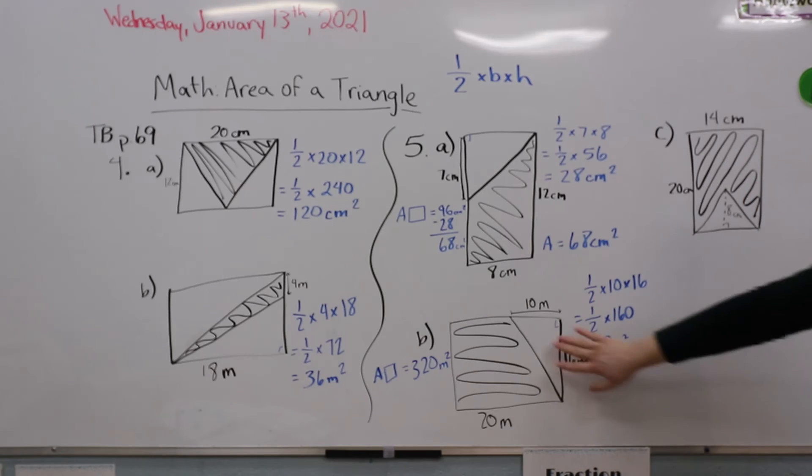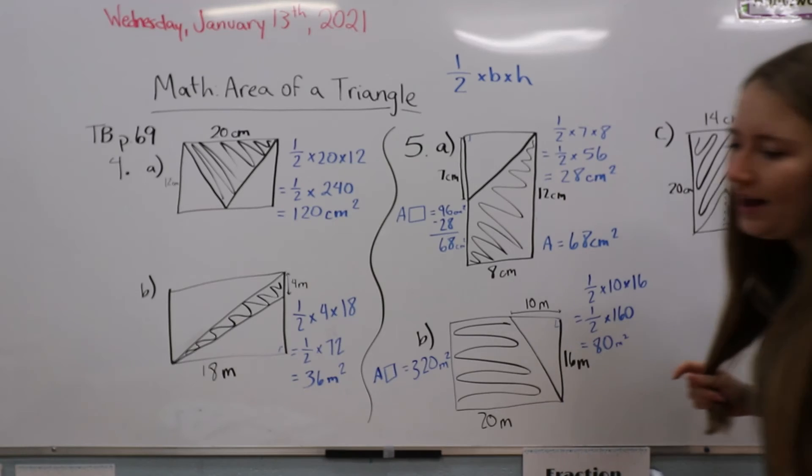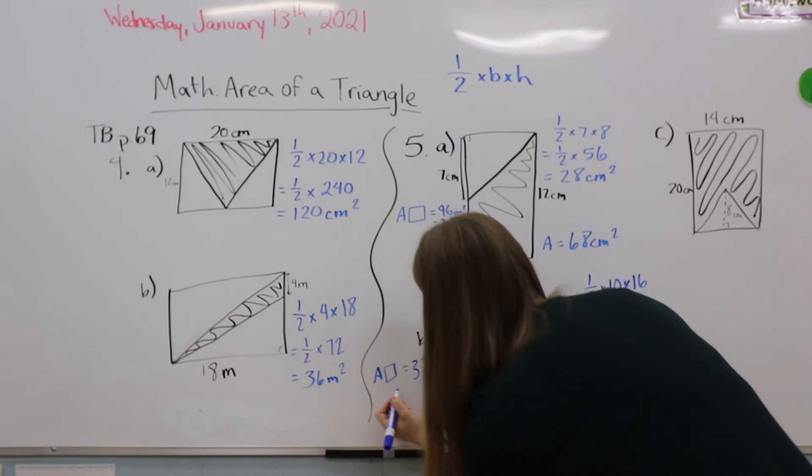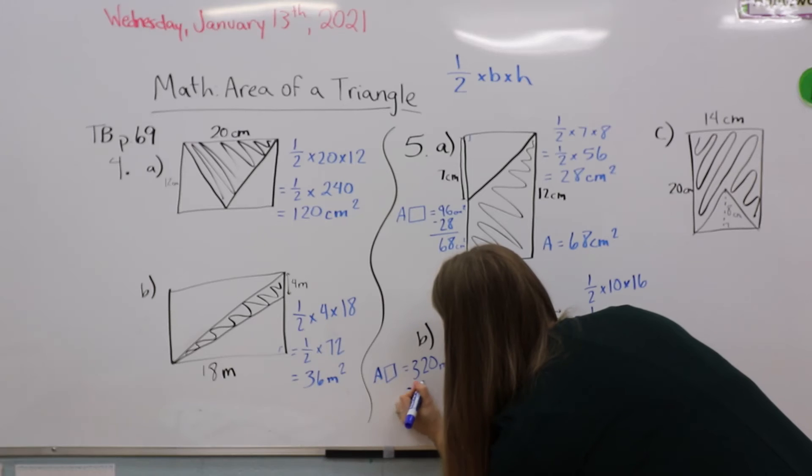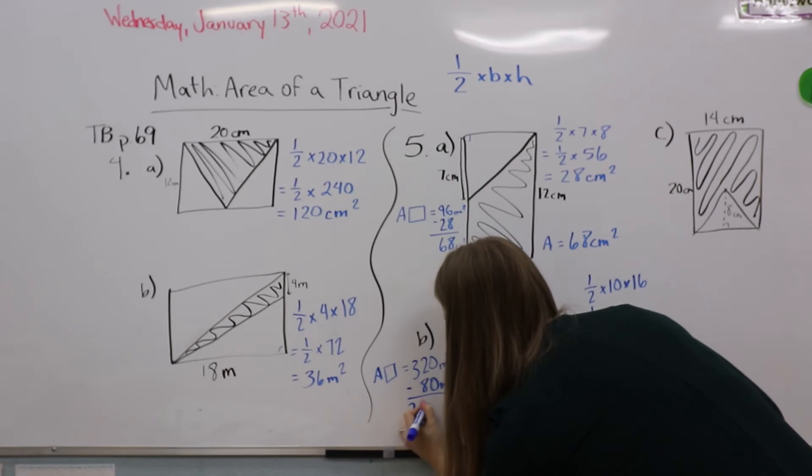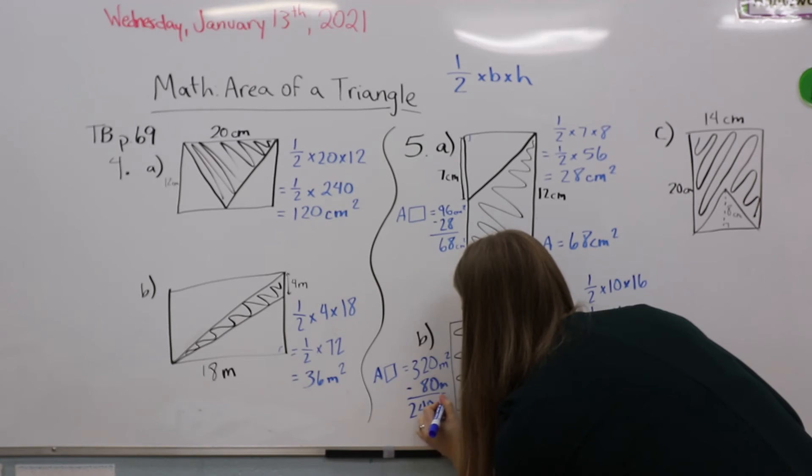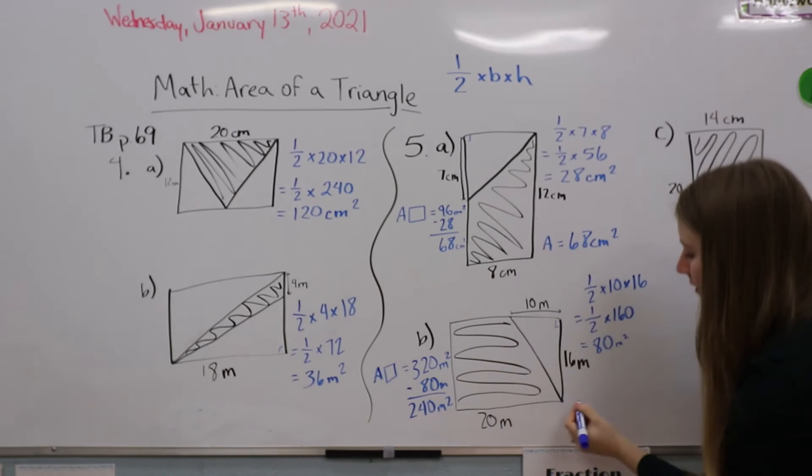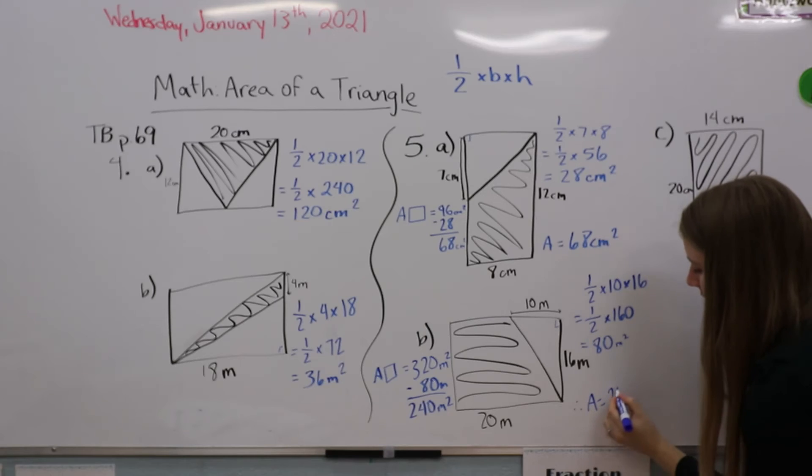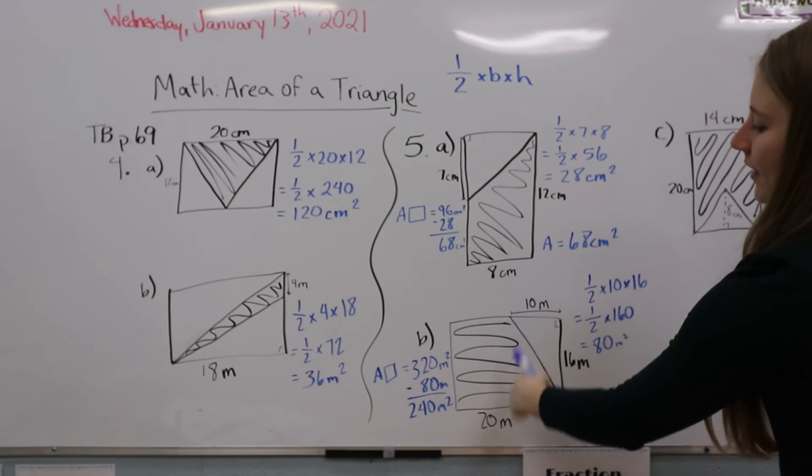That's the area of our little triangle in here, and we just have to do the subtraction now. So 320 minus 80 is 240. Our area is 240 meters squared for the shaded area.